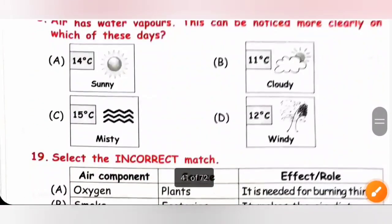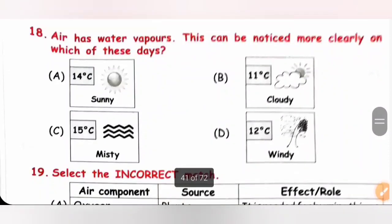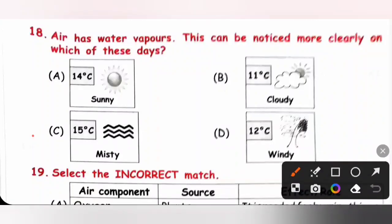Question 18: Air has water vapours. This can be noticed more clearly on misty days. Option C is the correct answer.